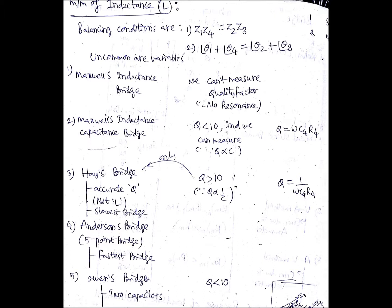This is going to measure accurate quality factor. So this bridge is going to measure Q very accurately. And this is the only bridge which is giving quality factor of greater than 10. And the quality factor here is inversely related to the capacitance. That is, Q equals 1 divided by omega C4 into R4. It is going to measure accurate quality factor but not inductance. That is important. And it is the slowest bridge. So the time taken by this bridge is more for measuring inductance.